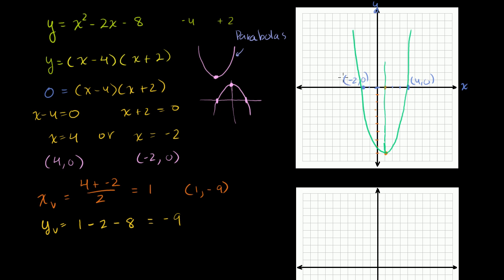The other point you may be interested in is the actual y-intercept. If x is equal to 0, you immediately see that y is equal to negative 8. So the point 0, negative 8 should also be on this graph — and it is. Let's do another one of these.